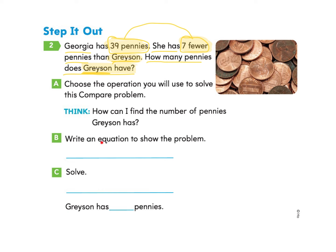So here we have write an equation to show the problem. So I'm going to take the number of pennies that she has, 39, and I'm going to add them to the number of pennies that are fewer from what Grayson has, because I want to find out what does Grayson have. So my equation is 39 plus seven equals the unknown, which is the amount of pennies that Grayson has. So let's go ahead and solve this equation.